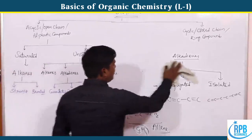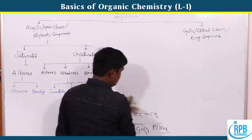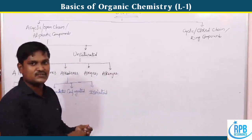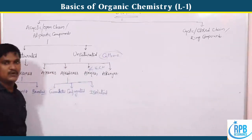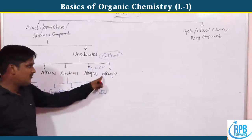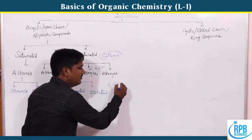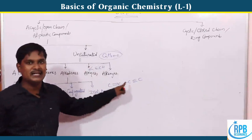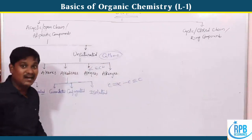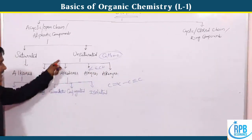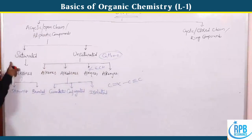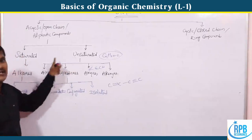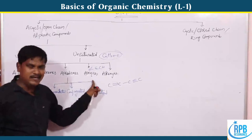Now coming to alkynes. Alkynes contain a carbon-carbon triple bond (C≡C) with the general formula CnH2n-2. Alkynes are unsaturated compounds and can have both double and triple bonds. Acyclic open chain compounds are thus divided into saturated alkanes and unsaturated types including alkenes, alkadienes, alkynes, and alkenines.